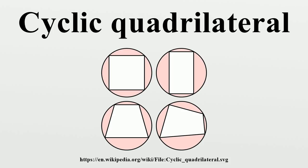The area K of a cyclic quadrilateral with sides A, B, C, D is given by Brahmagupta's formula, where S, the semi-perimeter, is S equals one-half the sum of the sides. It is a corollary to Bretschneider's formula since opposite angles are supplementary. If also D equals zero, the cyclic quadrilateral becomes a triangle and the formula is reduced to Heron's formula.